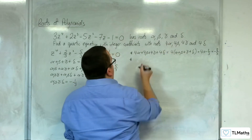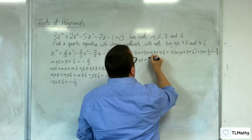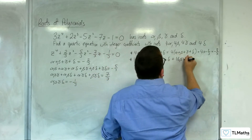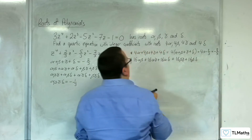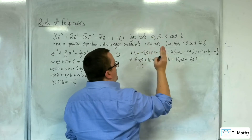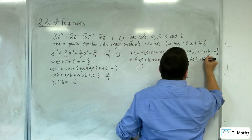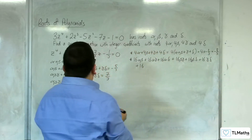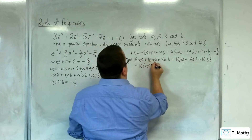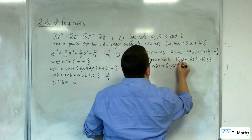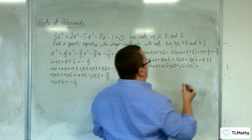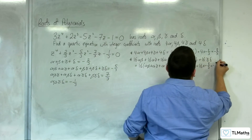Then we need 4 alpha × 4 beta + ... giving us 16 alpha·beta + 16 alpha·gamma + 16 alpha·delta + 16 beta·gamma + 16 beta·delta + 16 gamma·delta. That's 16 lots of (alpha·beta + alpha·gamma + alpha·delta + beta·gamma + beta·delta + gamma·delta), so 16 lots of -5/3, which is -80/3.